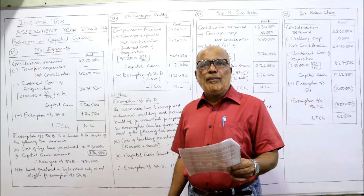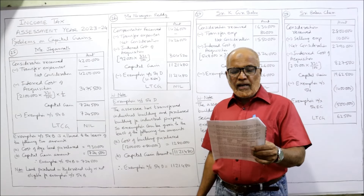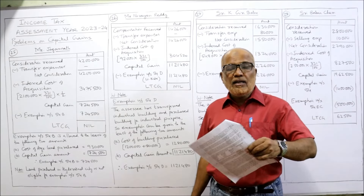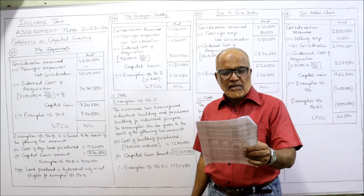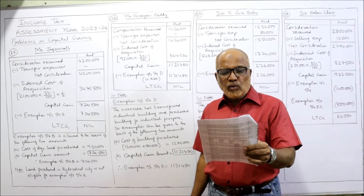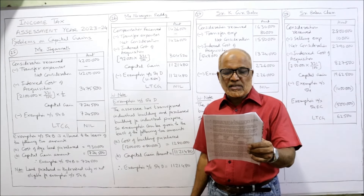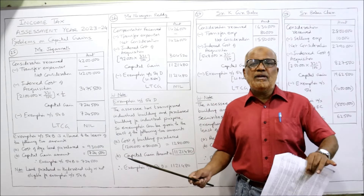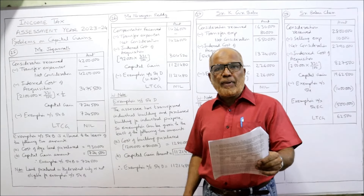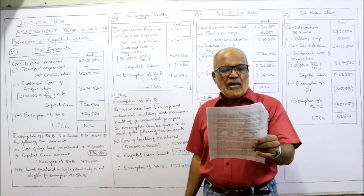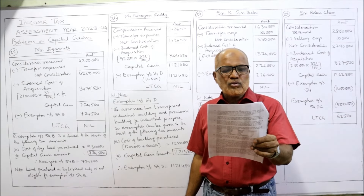Now the 26th problem. Mr. Narayan Ruddi has been owning a building since 1-5-1982 and using it for industrial purpose. The cost of the building is 92,000. During the previous year the state government acquired the building by passing an ordinance and paid 14,26,000 as compensation. This industrial building has been compulsorily acquired by the government. Immediately he purchased an old building for industrial purpose for 12,00,000 and spent 80,000 for its renovation. Calculate income from capital gain.